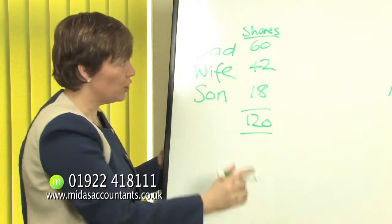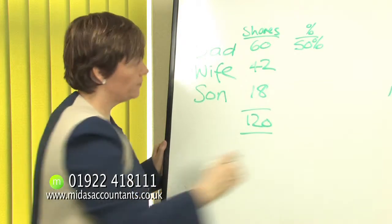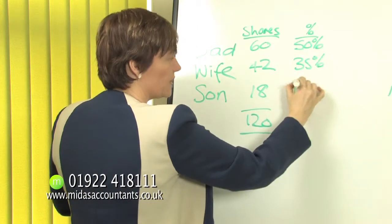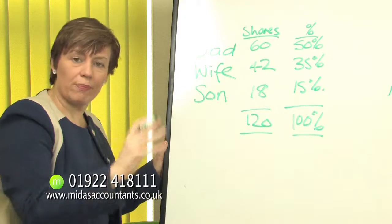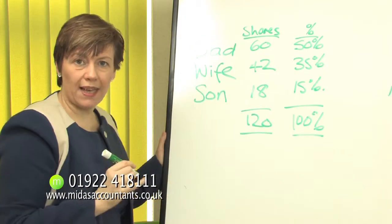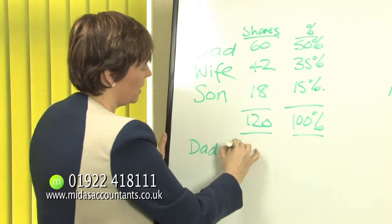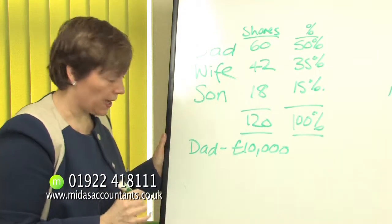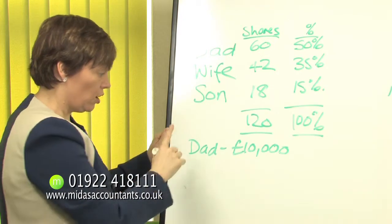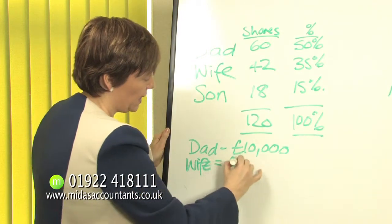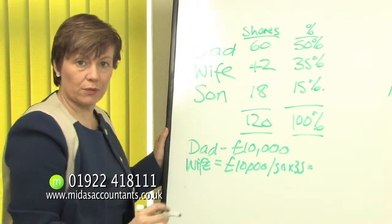Putting that into percentage terms: dad has 50%, his wife has 35%, and son has 15%, which adds up to 100%. So let's say the company has made a reasonable profit and they are going to pay out dividends. Dad decides he would like £10,000. The wife must have her dividend in proportion to her shareholding — so she will have £10,000 divided by £50,000 times £35,000, which comes to £7,000.